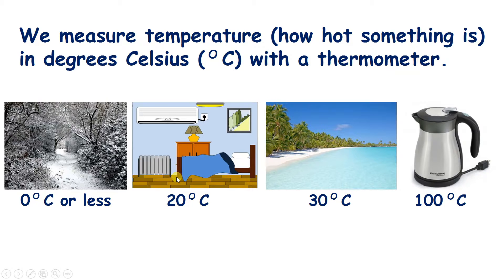When you're indoors, the temperature is usually about 20 degrees. And if it's snowing outside, the temperature is usually 0 degrees, or sometimes even less — so sometimes you hear the temperature might be minus 1 or minus 2. Well, that means that it's even colder than 0.